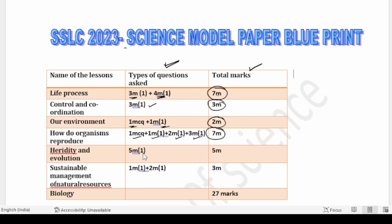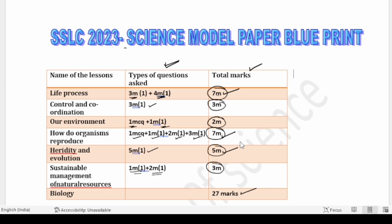Heredity and Evolution has one five-mark question, so only five marks total are allotted. Sustainable Management of Natural Resources has one one-mark question and one two-mark question, totally three marks. So in total, Biology gives you twenty-seven marks. By reading just three lessons — Life Process, How Do Organisms Reproduce, and Heredity and Evolution — you can get 14 plus 5, that is 19 marks.